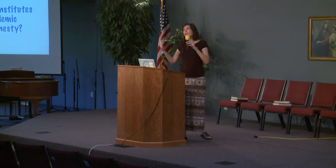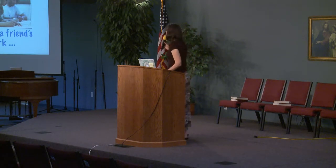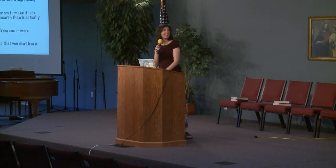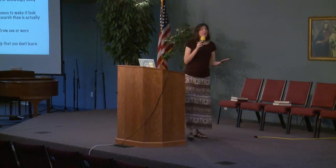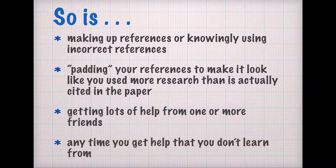What most students want to know is what constitutes academic dishonesty — when am I crossing the line? We're all familiar with copying a friend's work; that's clearly academic dishonesty. But so is making up references or knowingly using incorrect references. And what about padding your references to make it look like you used more research than is actually cited in the paper? Even if you read 15 different sources, if you only used four of them in the paper, you only put those four in your references.